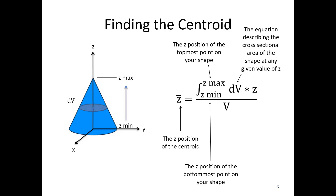You're going to be multiplying by dV, where dV is the equation describing the cross-sectional area of the shape at any given value of z. And z is just z as a variable that gets into the integral. The bottom is just going to be the total volume of your shape — you'd look up the volume of a cone. After the integration part happens, you divide by the total volume.